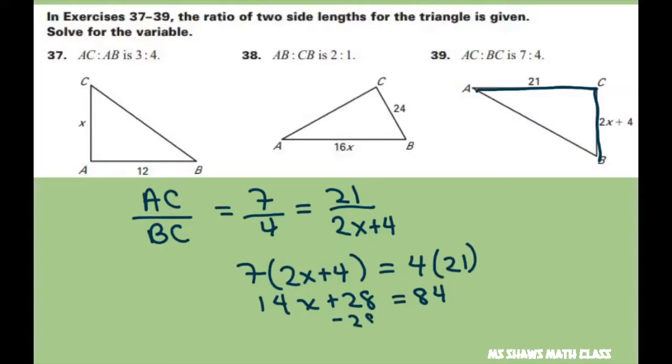Subtract 28 from both sides. So 84 minus 28 gives you 56. So you get 14X equals 56. And now you divide both sides by 14. And 56 divided by 14 is 4.